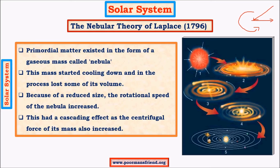There is coalescence, and the centrifugal force keeps throwing mass outwards while gravitational force keeps mass towards the centre. When the centrifugal force is significant enough, it throws a certain amount of mass towards the exterior of the disc. At the centre, a huge mass combines to give rise to the sun, and those lumps of gases coalescing outside the centre give rise to planets.